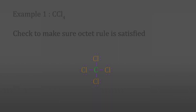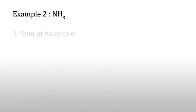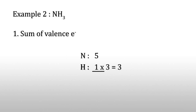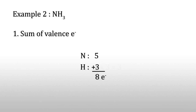Now another example: ammonia, NH3. Sum of valence electrons: nitrogen has five valence electrons and hydrogen has one valence electron. There are three hydrogens, giving three electrons. Total: eight valence electrons.